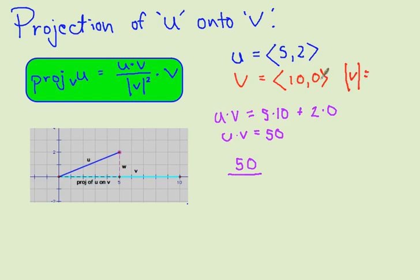10 squared plus 0 squared is 100, which is 10. So the magnitude, and you can see that right here, the magnitude is 10. And notice in the formula, we're squaring that. And I hope you'll see that the projection should be 5, 0. Let's see what we get here.